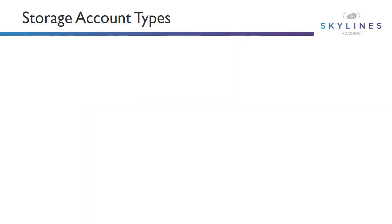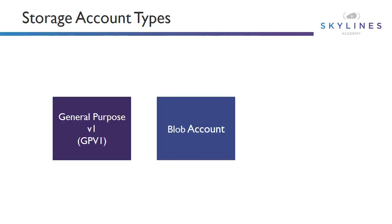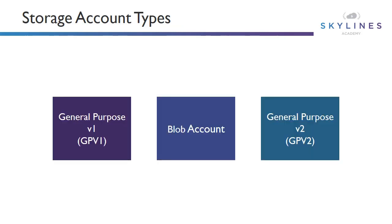If we look at the storage account types, we have three major types: GPV version 1, blob accounts, and GPV version 2. GPV version 2 is the main choice you will use when you create storage accounts in Azure now, because it allows us to do page blobs, block blobs — so we can store images, videos — and we can also store VM disks in there as well. GPV1 allowed us to store blobs and other disks too, but a blob account was specific only for blob storage. That was confusing for everybody, so that's going away, and GPV2 accounts are ultimately the direction going forward.